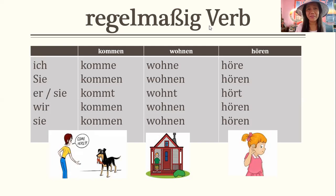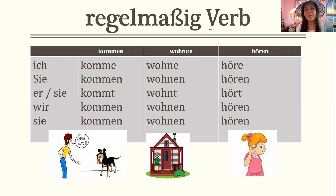Kommen auf Englisch bedeutet 'to come.' Let's read the Konjugation. For ich: you just delete the -en and add the letter -e, so ich komme, which means 'I come.' Für Sie: Sie kommen, 'you come.' Er kommt — you just add the -t. Sie kommt, 'he comes,' 'she comes.' Wir kommen, und dann sie kommen.